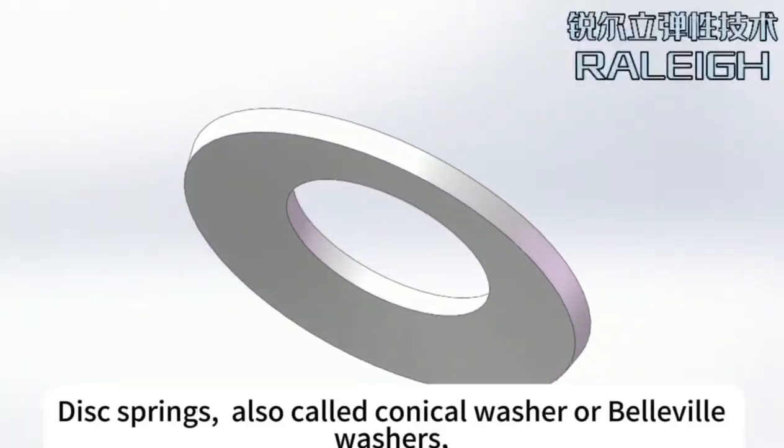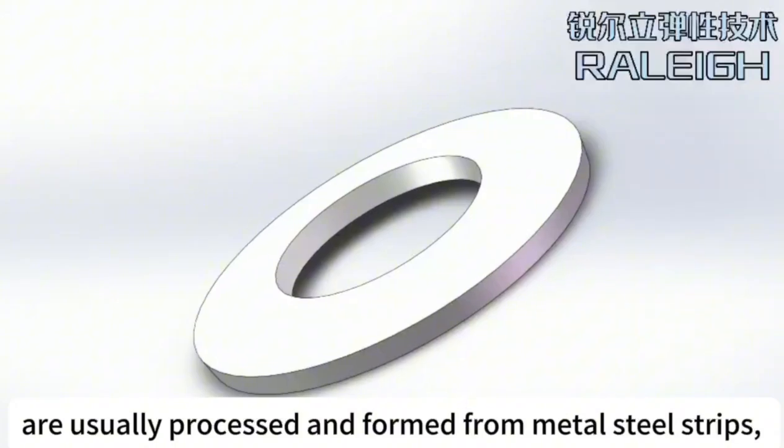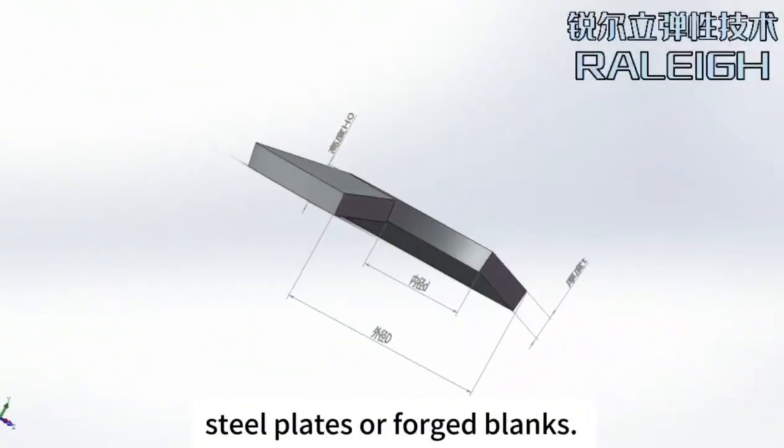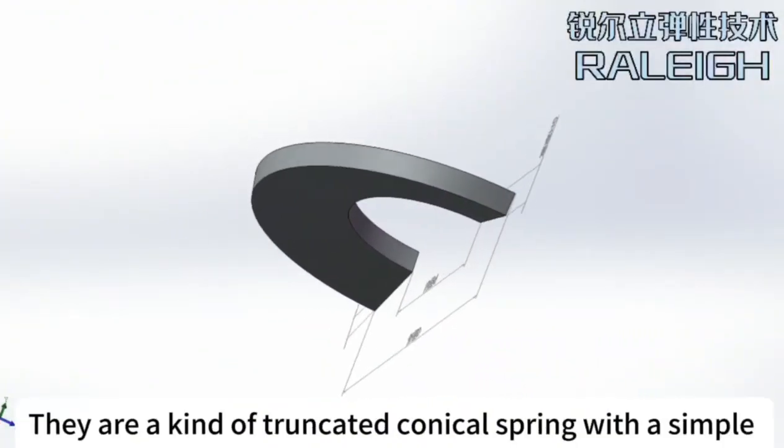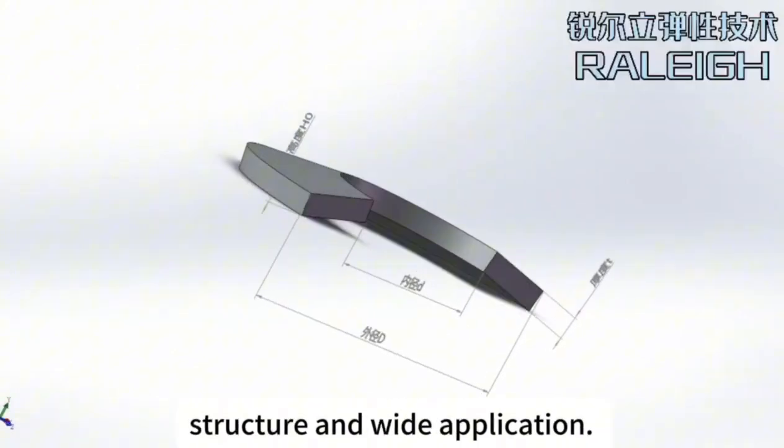Disc springs, also called conical washers or Belleville washers, are usually processed and formed from metal steel strips, steel plates, or forged blanks. They are a kind of truncated conical spring with a simple structure and wide application.